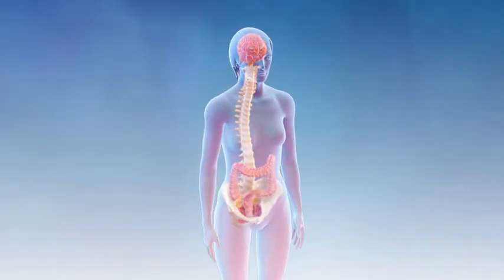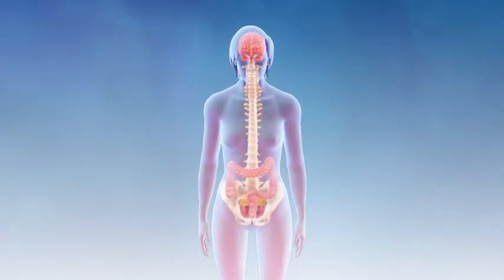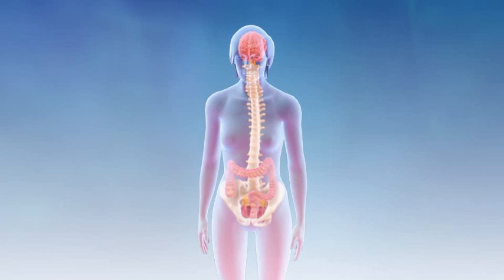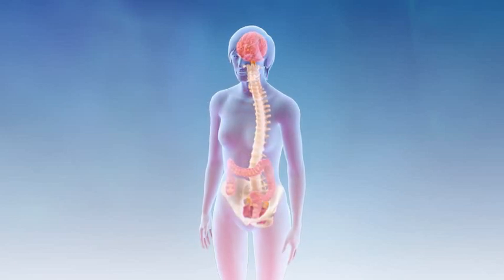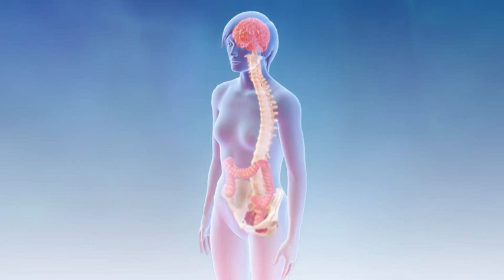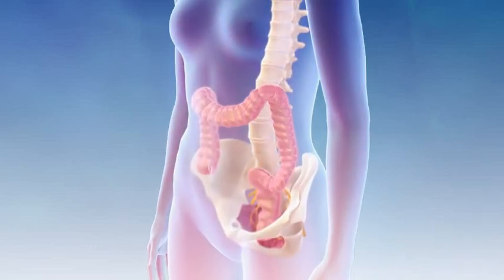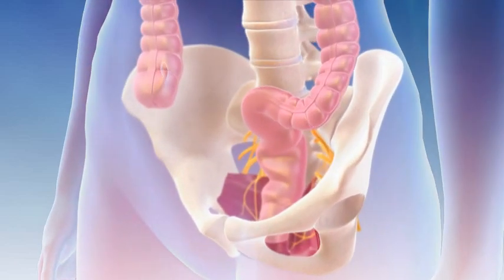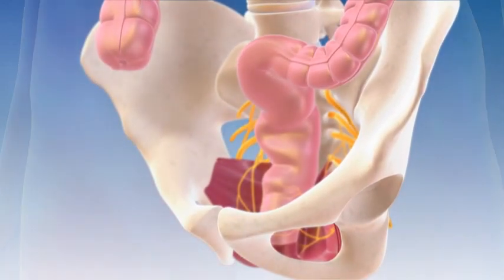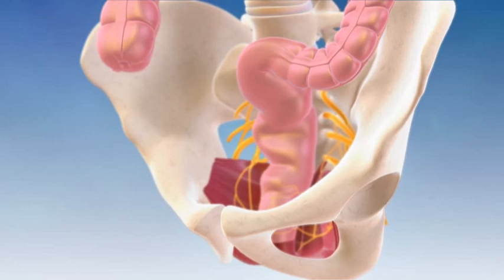Normal evacuation and bowel control are the result of intricate communication within the entire colon, pelvic floor and anorectal muscles, the sacral nerves, and the brain. Fecal continence depends on complex interactions between anal sphincter function, anorectal sensibility, puborectalis muscle activity, colorectal motility, stool consistency, and rectal wall properties.